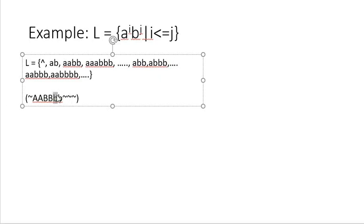Once all small a's have been converted into capital A and when you are going towards the right in search of tilde, you have to be sure that there can only be symbols capital B or small b — there cannot be any other symbols. If all capital B's are there and no small b exists, that means i is equal to j. If there exist one or more small b's, that ensures there are more b's than a's. This is the condition we have to keep in our Turing machine.